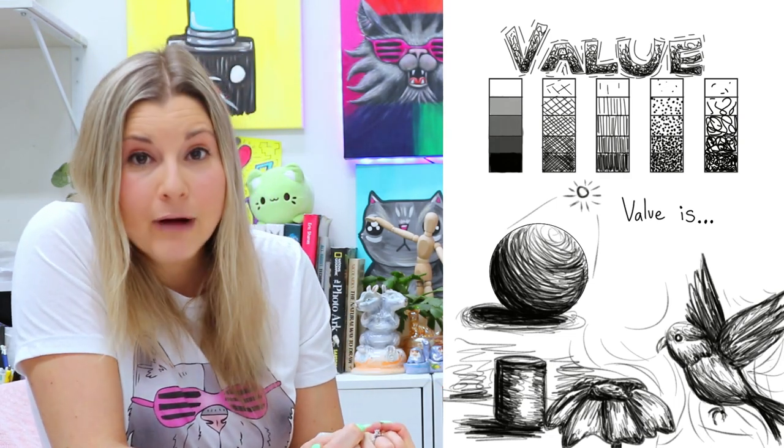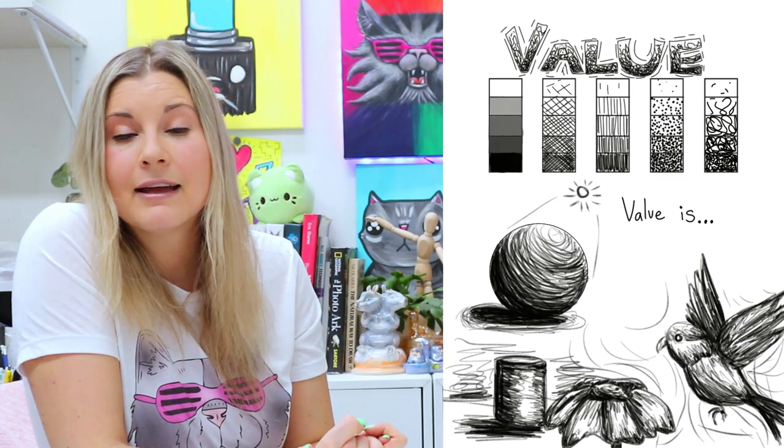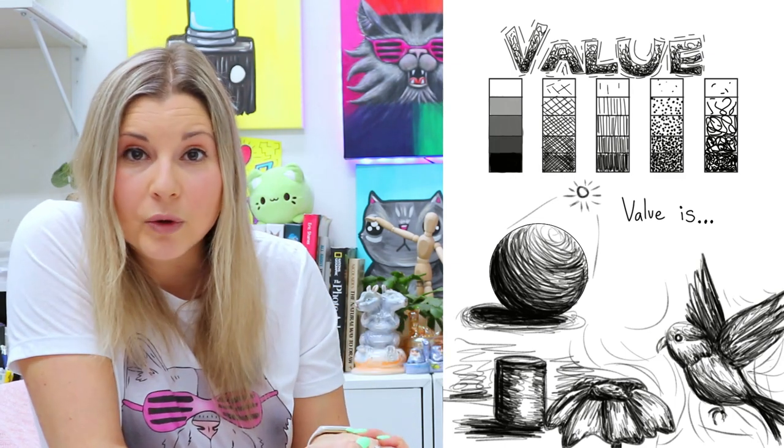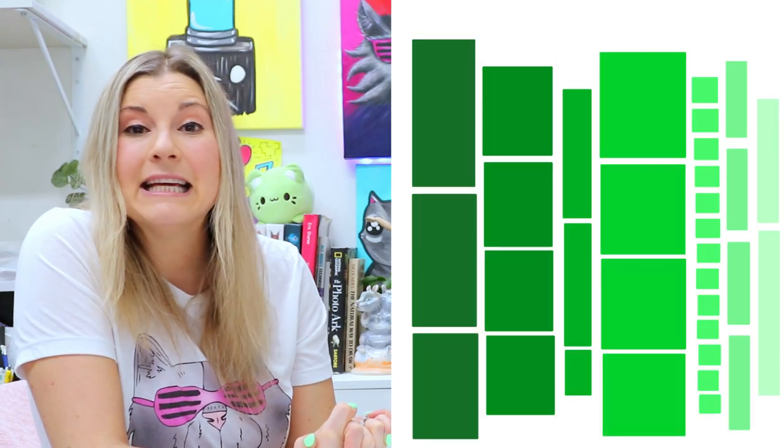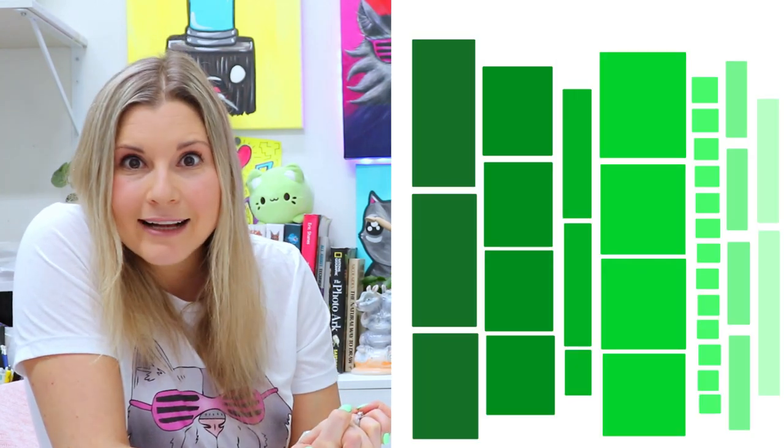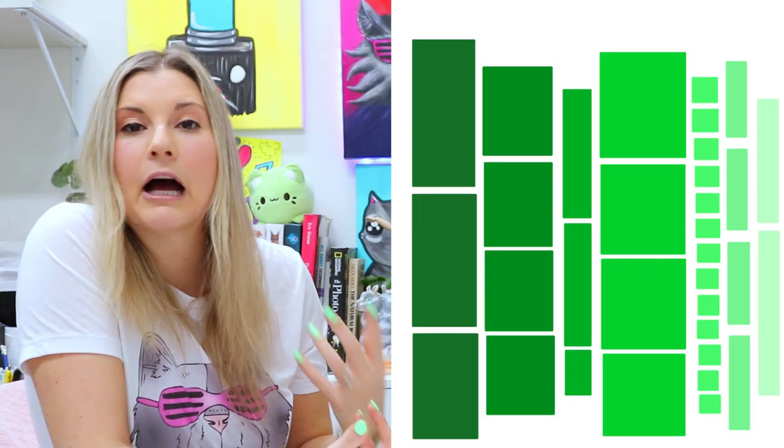If we add gray to a color, so color plus gray, we would make a tone. And if we were to add black to a color, it's going to make a darker version of that color. And that is called a shade.